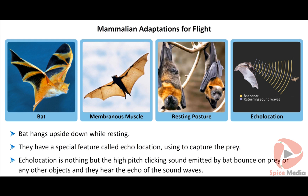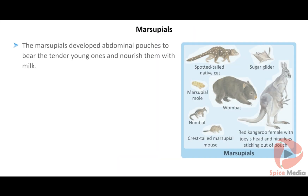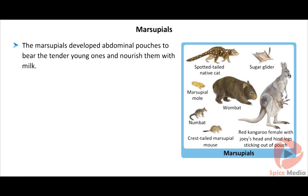Bats have a special feature called echolocation, with which they capture their prey and fly without hitting other objects. Echolocation is the high-pitch clicking sound emitted by bats that bounces on prey or any other objects and gets back as an echo of the sound waves.